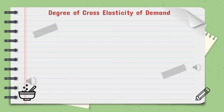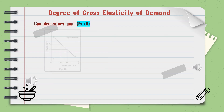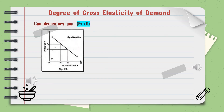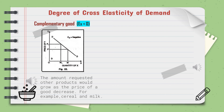The first degree of cross-elasticity is for complementary goods. The cross-elasticity value for complementary goods is less than 0, because when the price of one good decreases, the quantity demanded of the other good will increase. For example, cereal and milk are complementary goods.